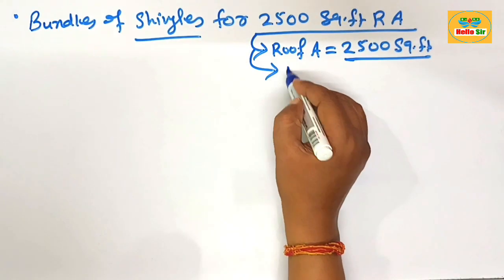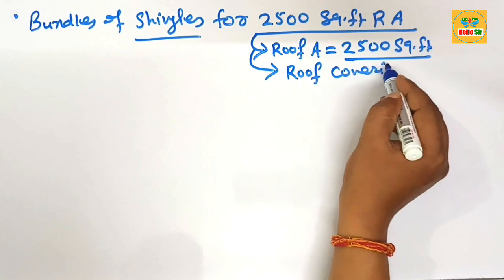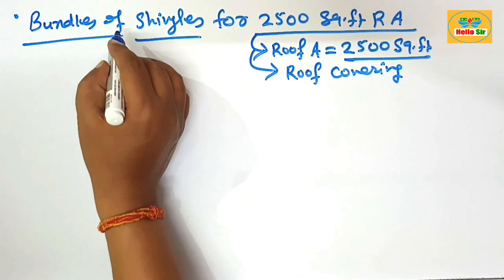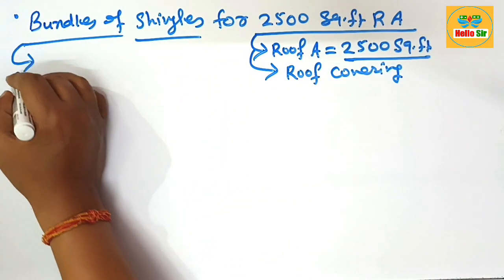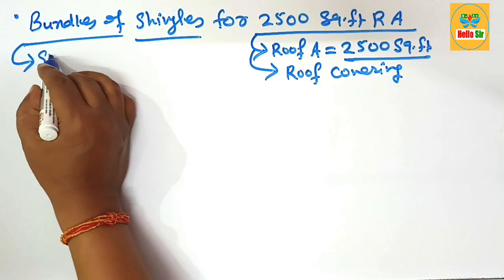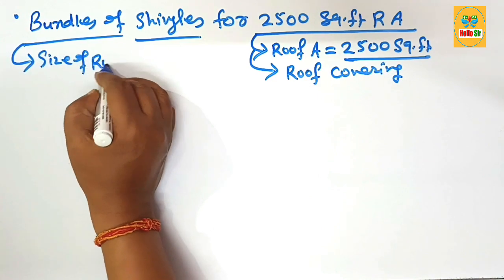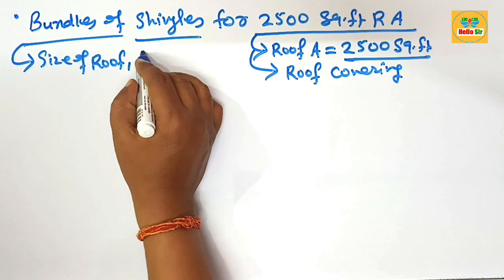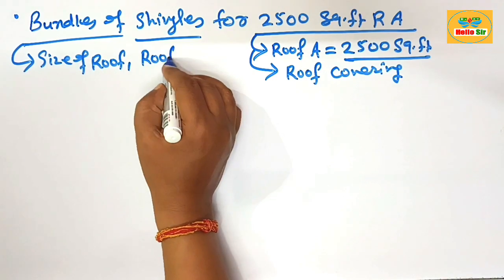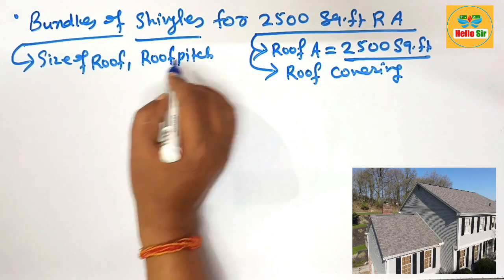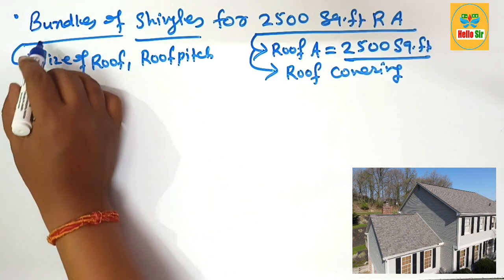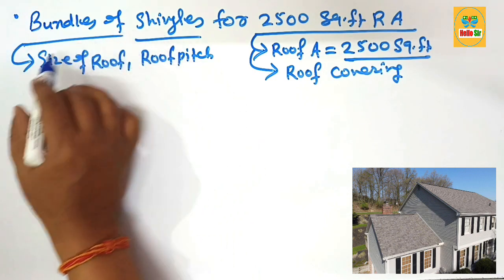material are used for roof covering. And the number of bundles of shingles required depending on many factors like the size of roof and what is the slope that means roof pitch and the construction requirement and number and types of shingles per bundle.